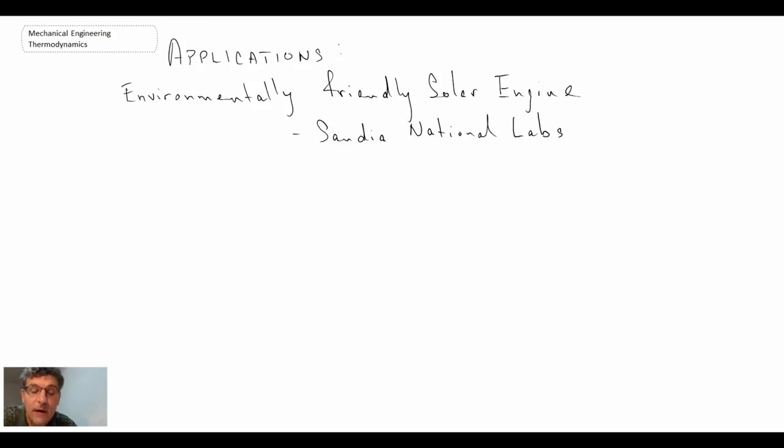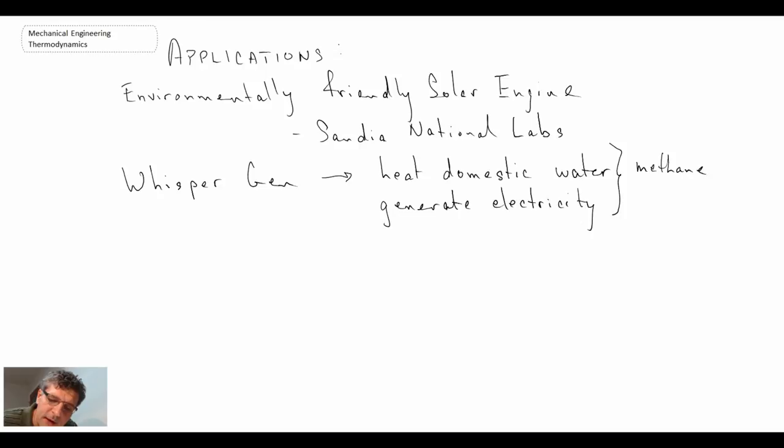Another application, there is a company, I believe out of New Zealand, called WhisperGen. And they were making a system, they still may, I'm not sure what their status is right now. But they were making a system to heat domestic water and also generate electricity. And this obviously would be something that would be burning methane. So you have internal combustion. But again, it's operating like an external fuel engine.